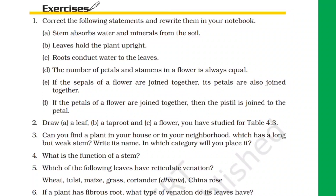Moving to B: leaves hold the plant upright. What holds the plant in a straight upright position? That is the stem of the plant. So the corrected answer is: stem holds the plant upright.